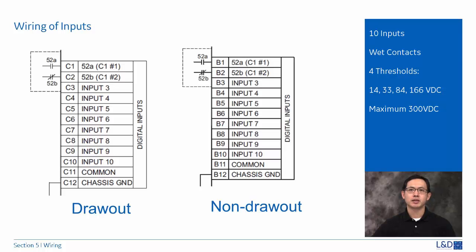The inputs should be connected to the positive terminal of an external DC power supply. The negative side of the external source must be connected to the relay's DC negative rail at terminal C11 for drawout type and B11 for non-drawout type.